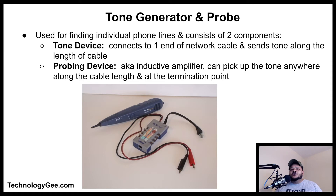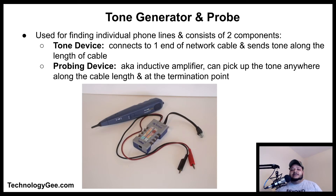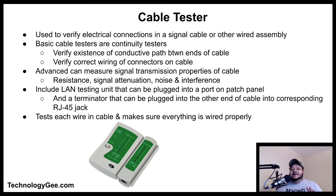A tone generator and probe kit is an excellent tool for finding individual phone lines. It consists of two components: the tone device, which connects to one end of the network cable and sends a tone along the length of the cable, and the probing device, also known as an inductive amplifier, which can pick up the tone anywhere along the cable length and at the termination point.